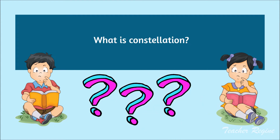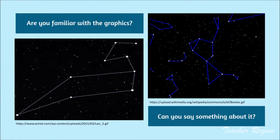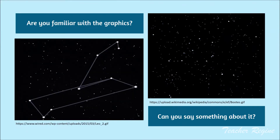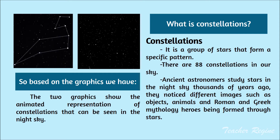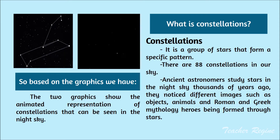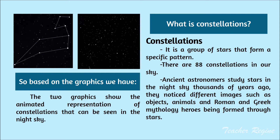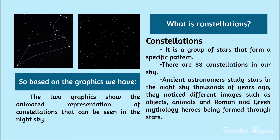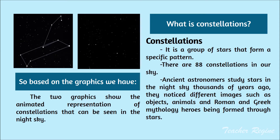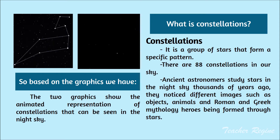What is constellation? The two graphics show the animated representation of constellations that can be seen in the night sky. Constellations are a group of stars that form a specific pattern. There are 88 constellations in our sky.